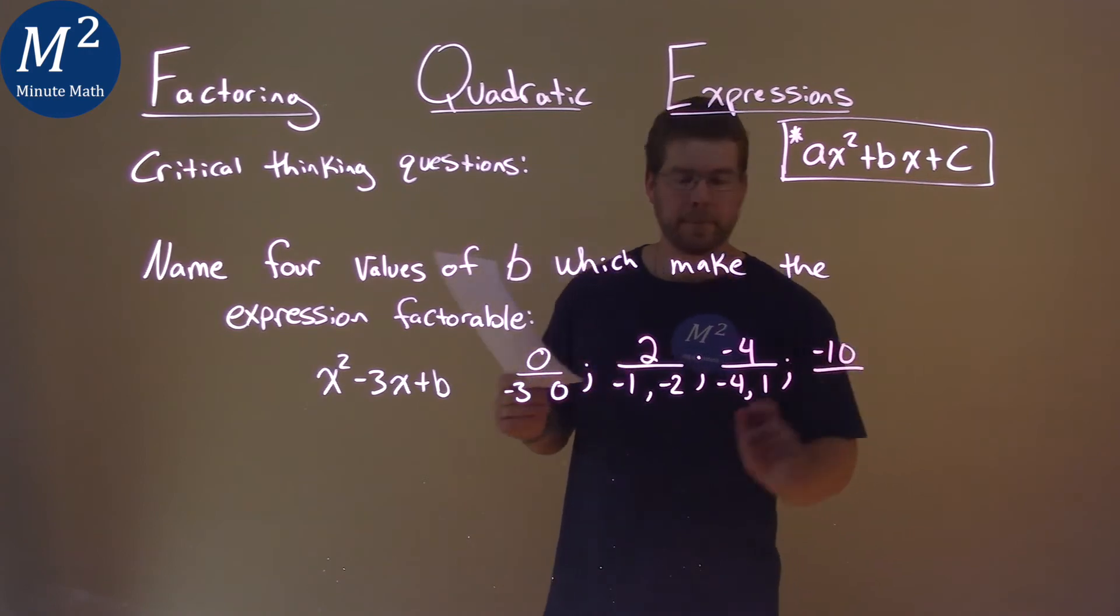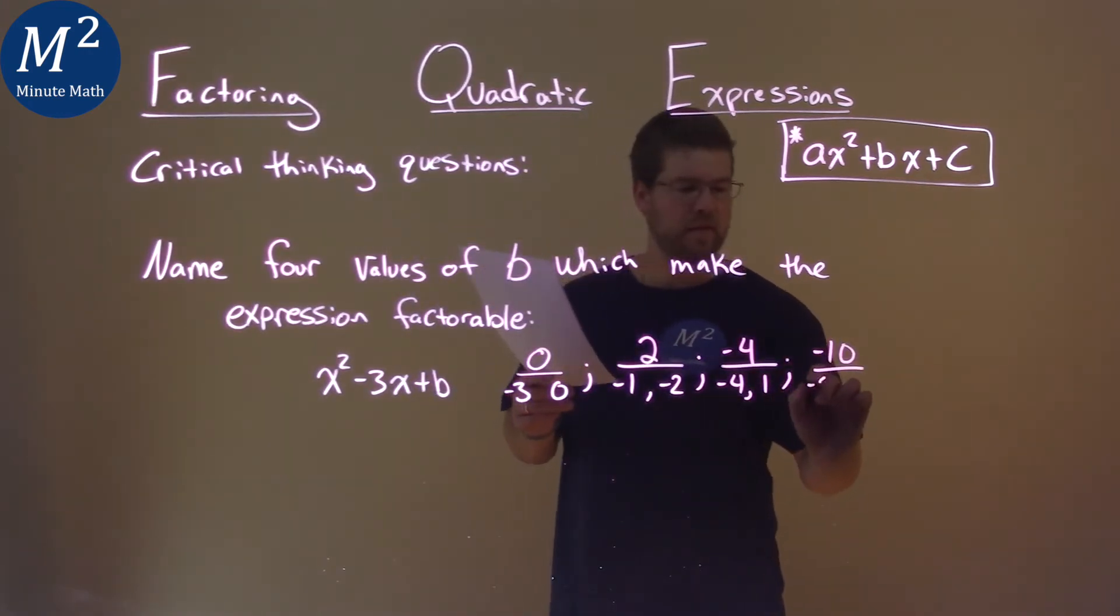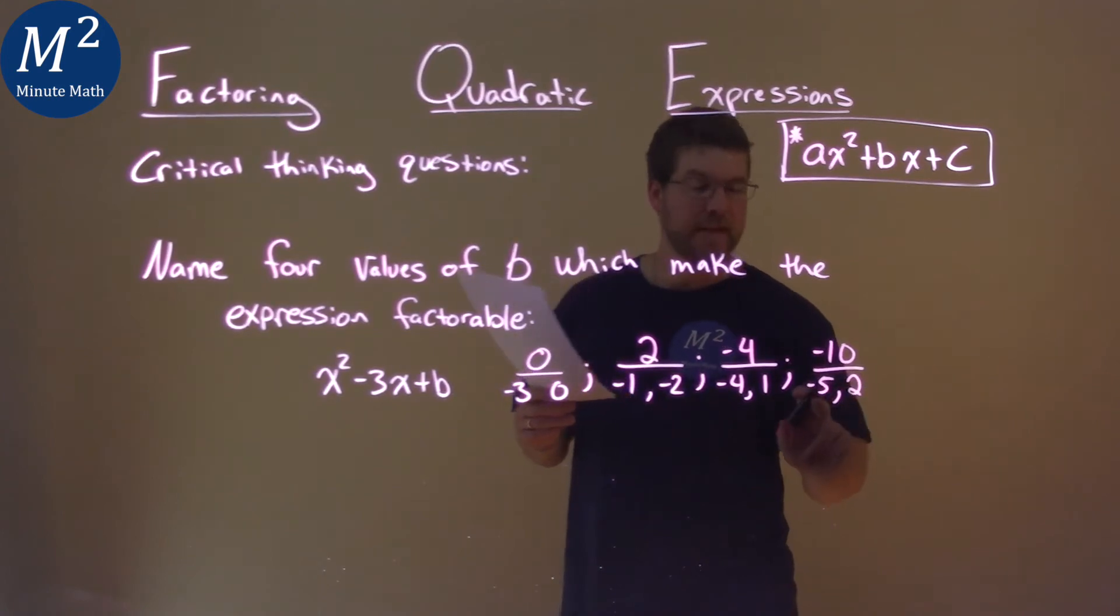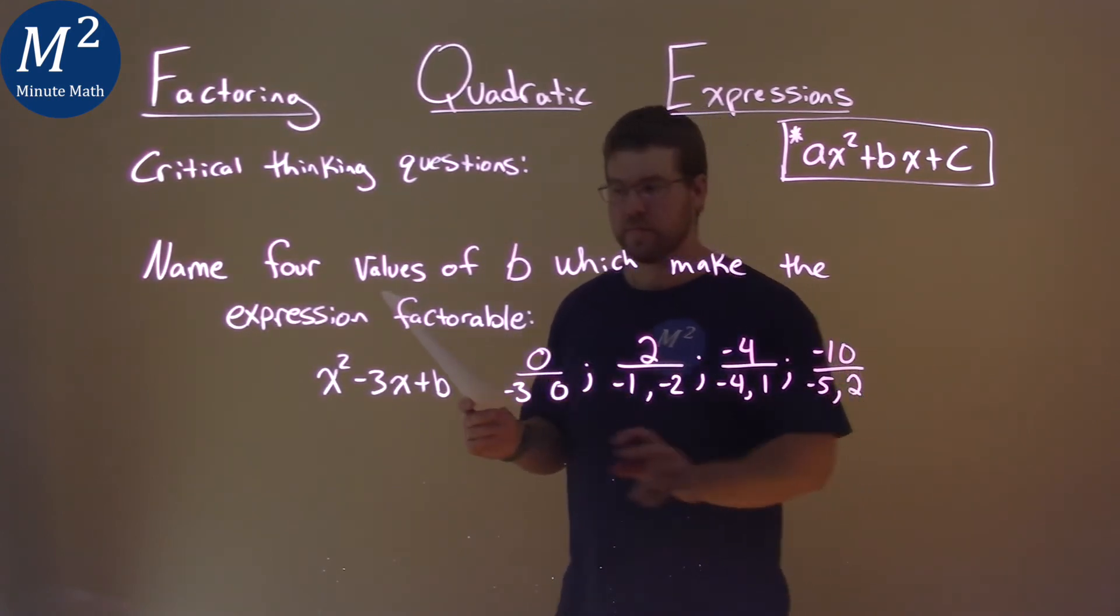Negative 10. Negative 10 can be negative 5 times positive 2. Negative 5 plus 2 is negative 3.